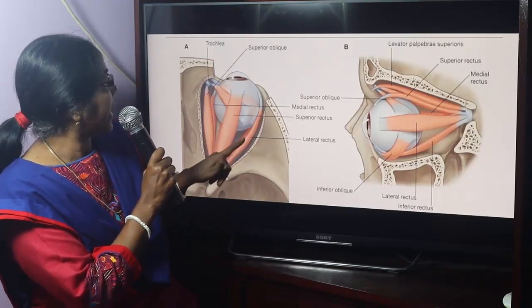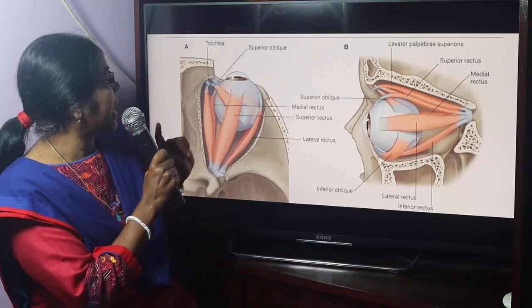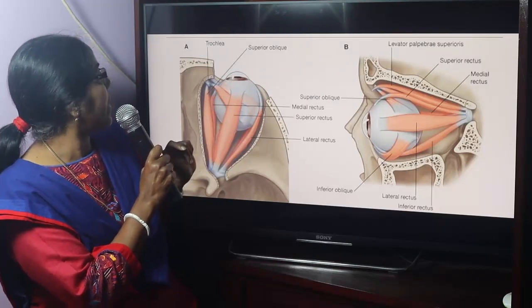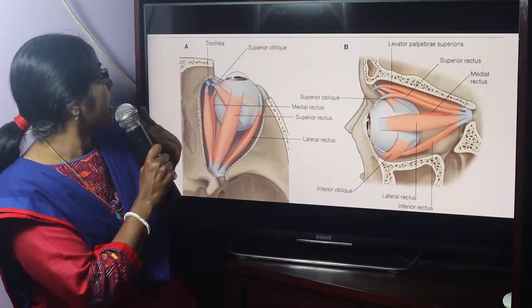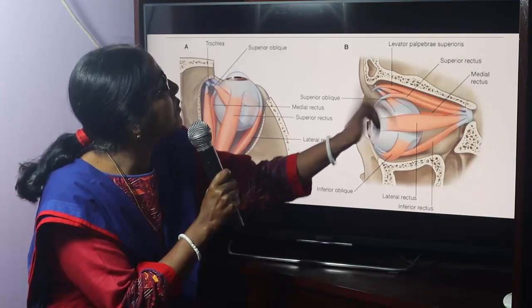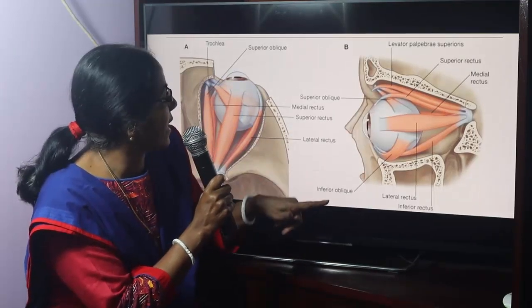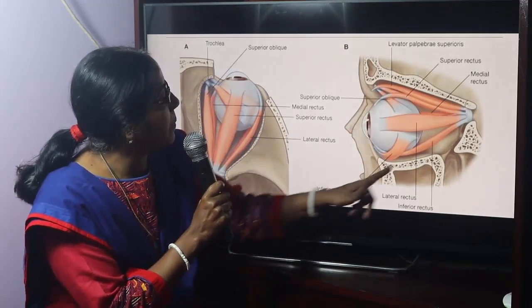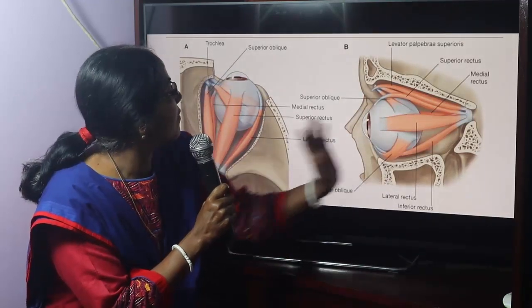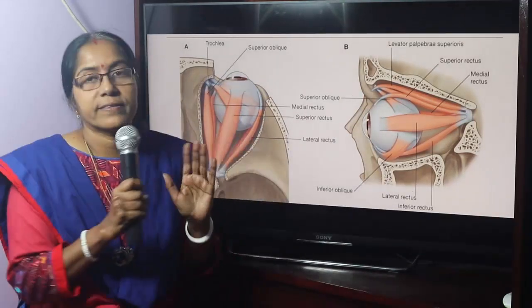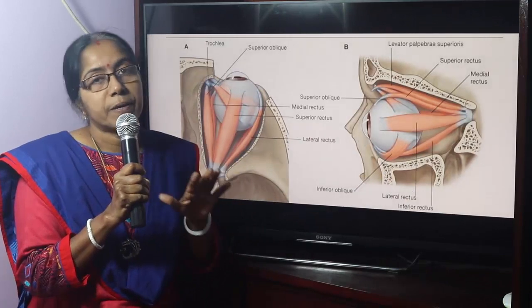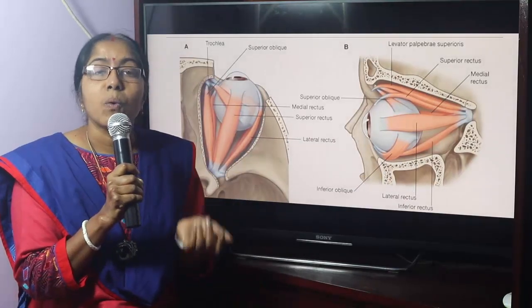This is the medial rectus, this is the lateral rectus, this is the superior rectus, this is the superior oblique, and this is the inferior rectus.